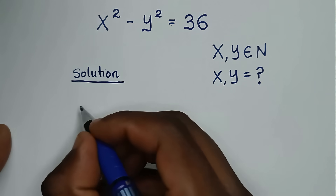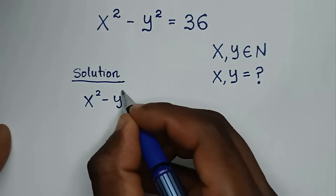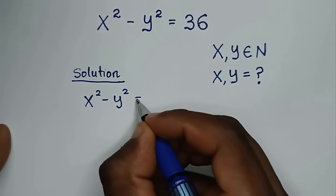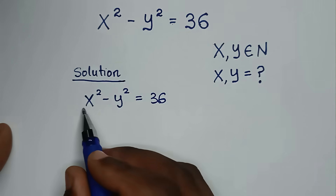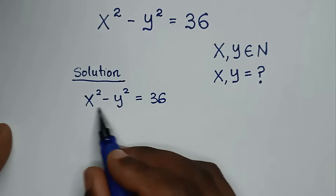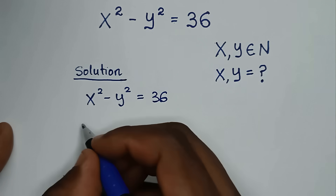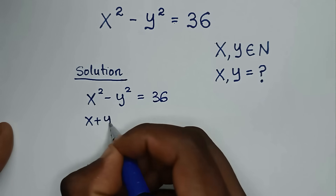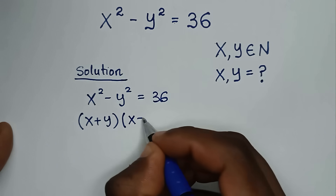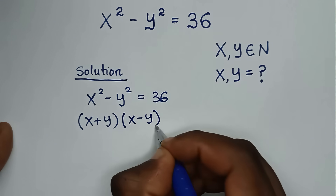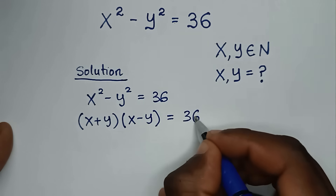From this problem, which is x squared minus y squared is equal to 36, this is a difference of two squares. So x squared minus y squared is the same as (x plus y) times (x minus y) is equal to 36.